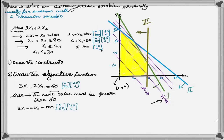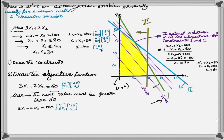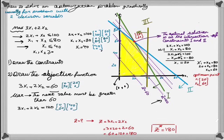As shown in this example, the last corner point that the objective function hits as it moves across the feasible area is this point. So the optimal solution is at the intersection of constraints 1 and 2. By solving the equations for the intersection, we find x1 equal to 20 and x2 equal to 60 as the optimal point. By replacing x1 and x2 in the objective function, we get z equal to 180, which is the optimal solution to this problem.